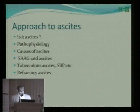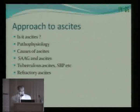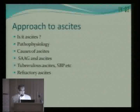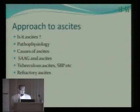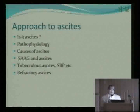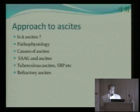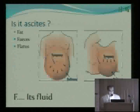The first question to always ask whenever there is ascites is: is it ascites? What is the pathophysiology? What are the causes of ascites in children? What is the use of serum albumin and ascites gradient in ascites? I'll talk about some conditions and then about refractory ascites, which is more seen in the adult situation but can be seen in pediatrics and can be extremely tricky to manage.